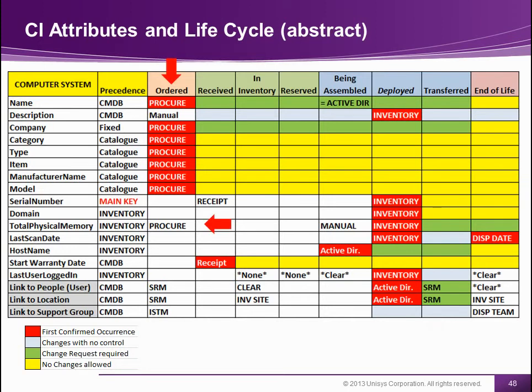For physical memory, you can know from the procurement people how much you have ordered. You can have someone verifying this information when they assemble the machine, just to make sure that it's not wrong. Because until then, the machine has maybe never been unboxed — so it's very difficult to know if we have the right amount of memory. The only time the machine is unboxed is when it's being assembled. At this stage, I need to have the people doing this verifying this information.